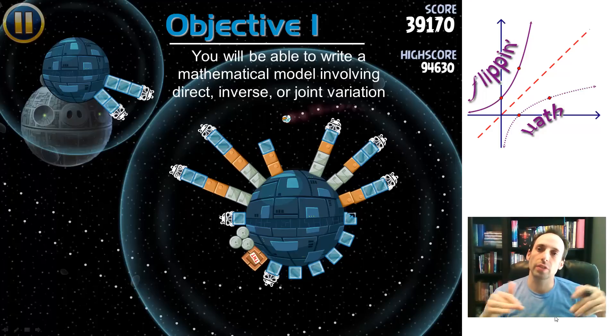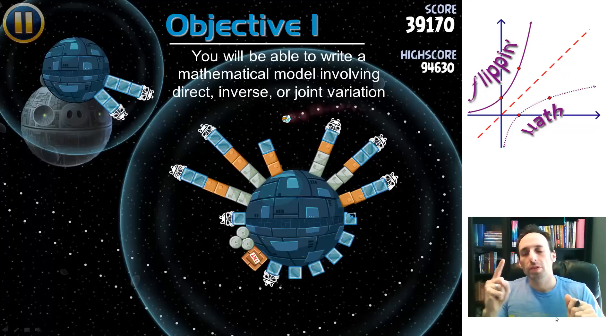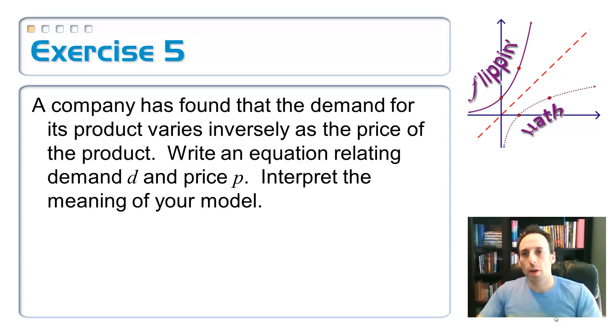Alright, here's the second part of objective one where we're talking about specifically modeling inverse variation. So we'll start off by taking a look at this exercise. A company has found that the demand for its product varies inversely as the price of the product.